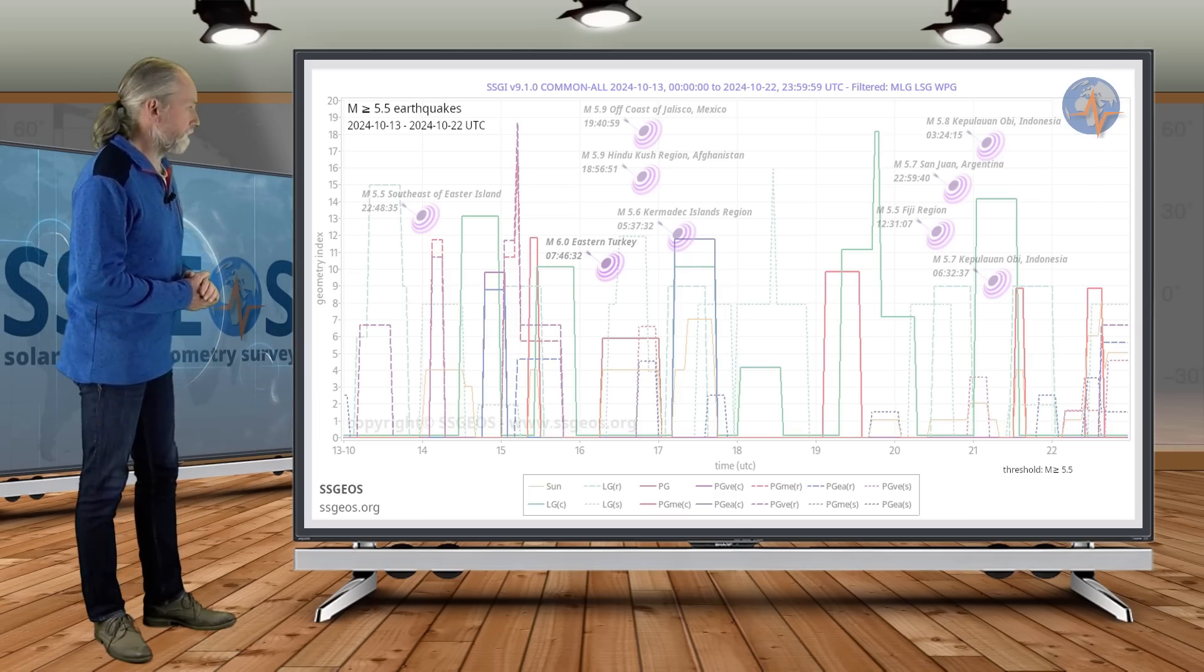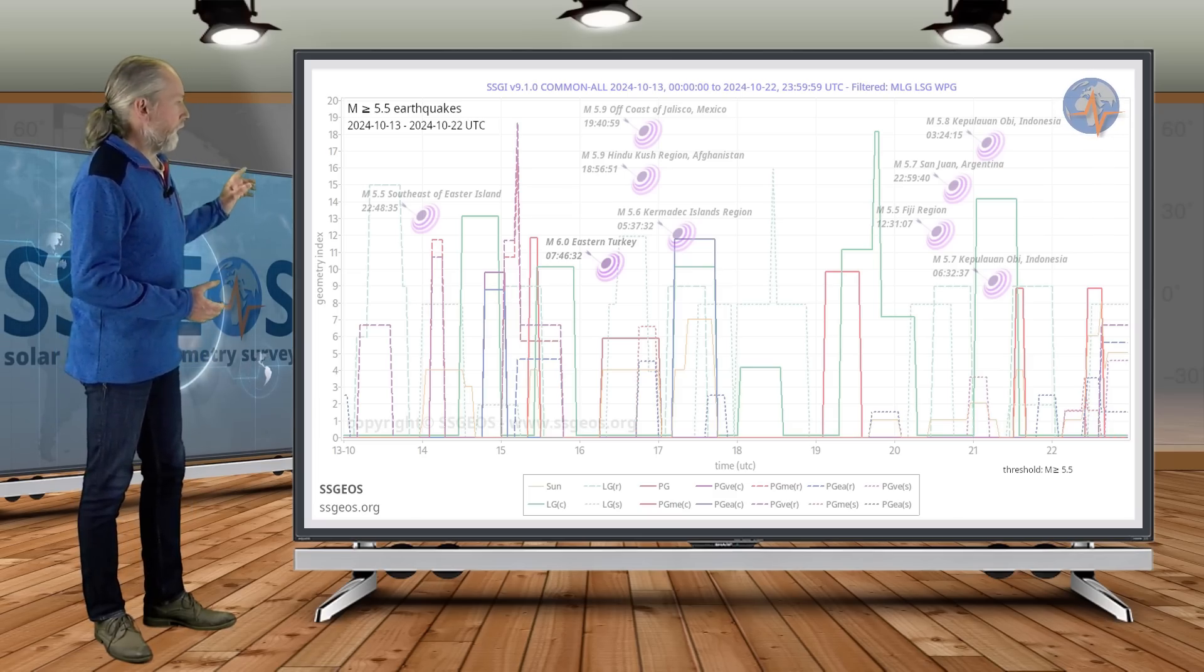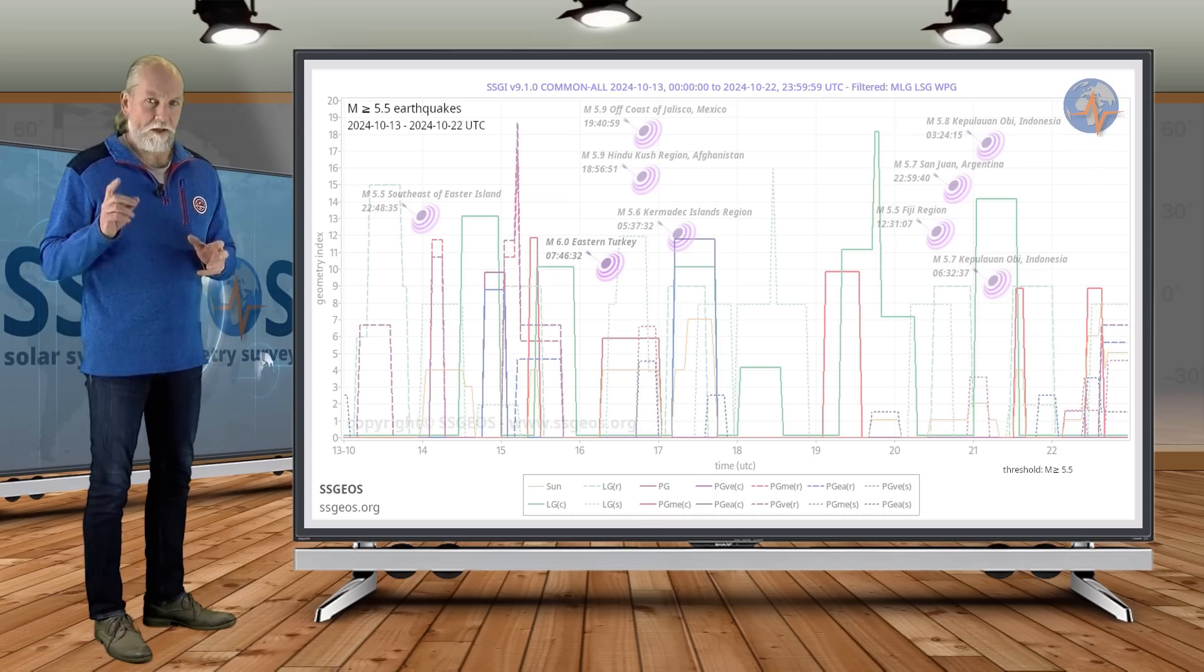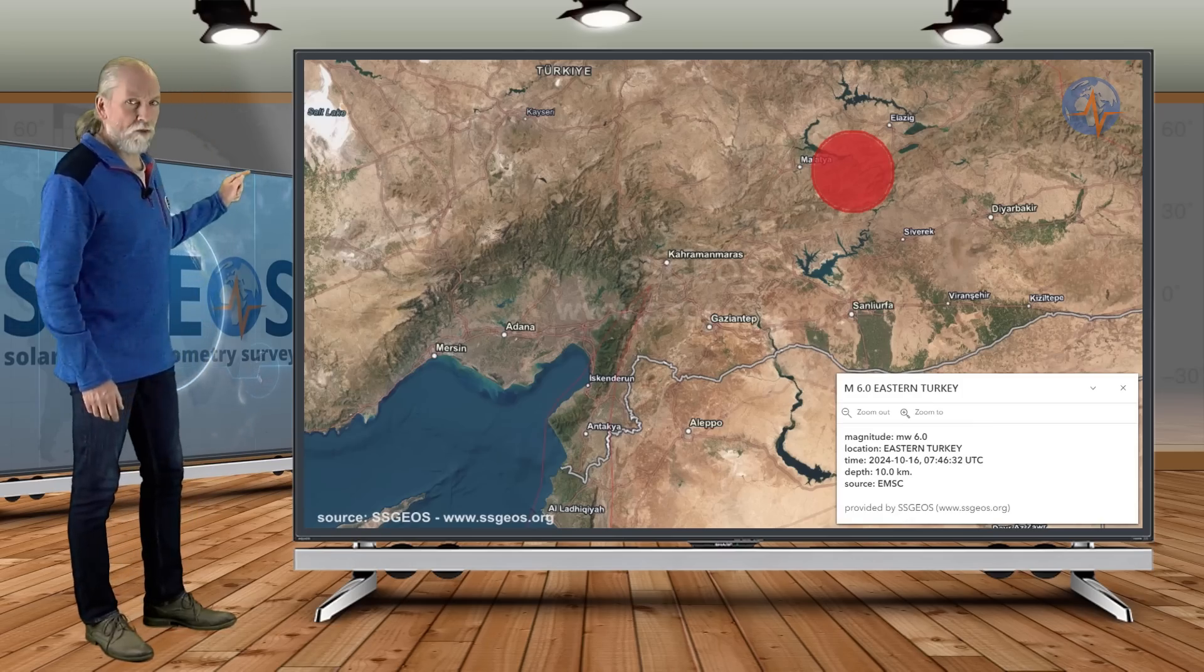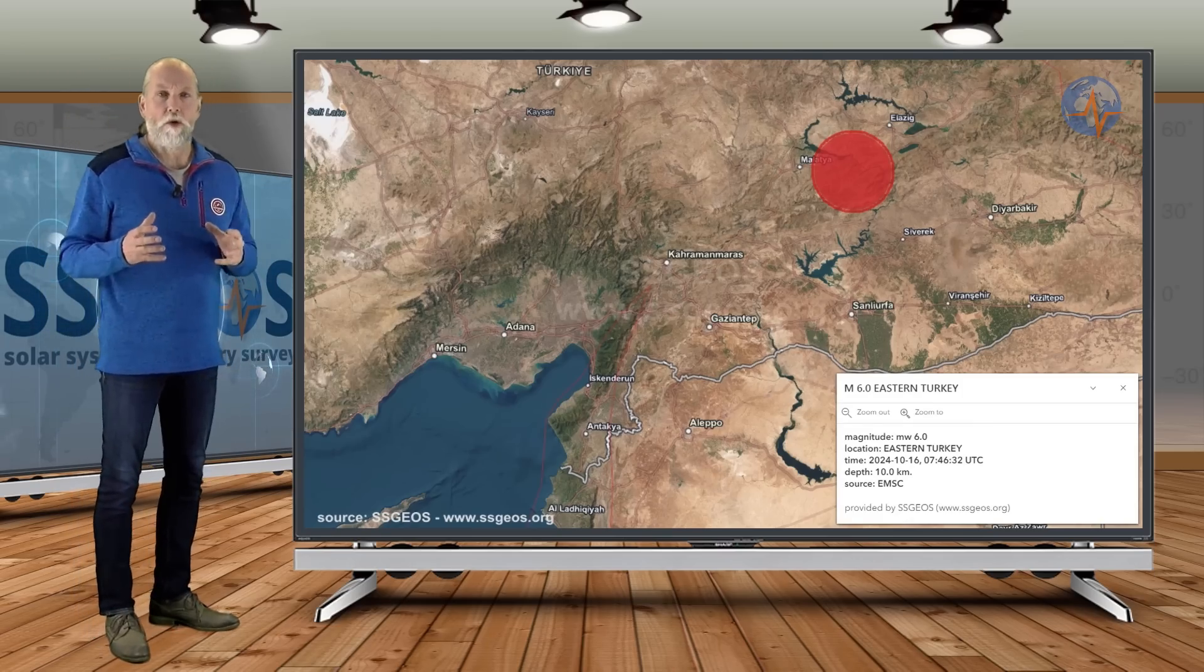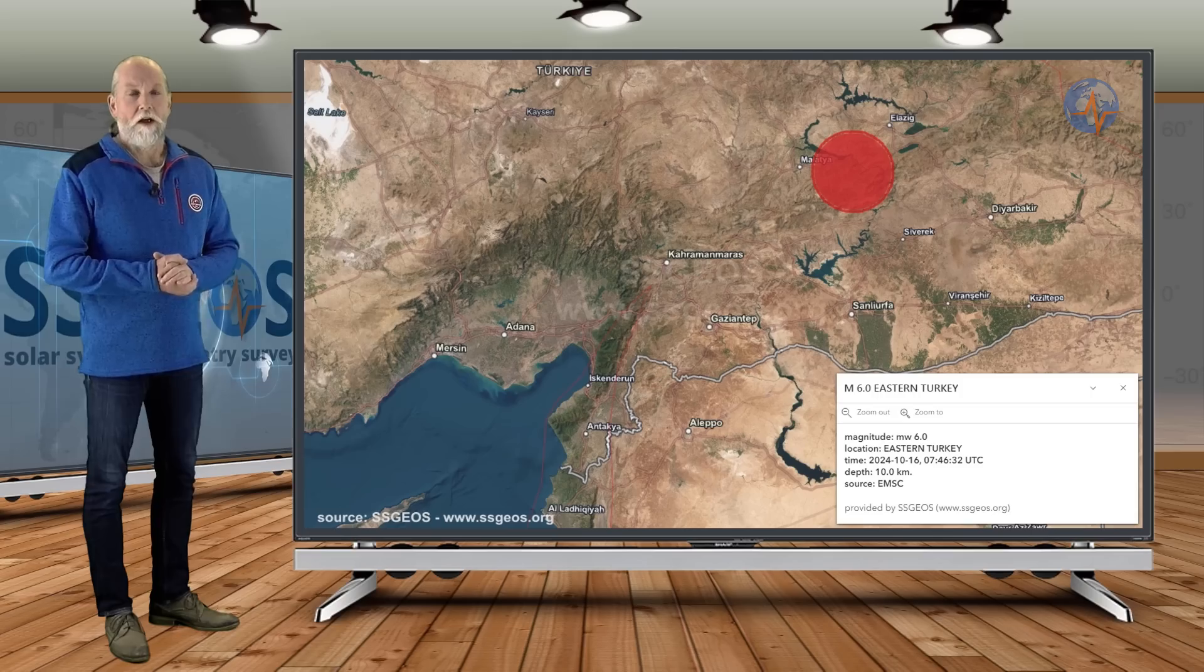So let's have a look at the magnitude 6 earthquake in eastern Turkey, because that deserves some attention. It happened in a region that was part of a sequence of strong and major earthquakes since 2020.